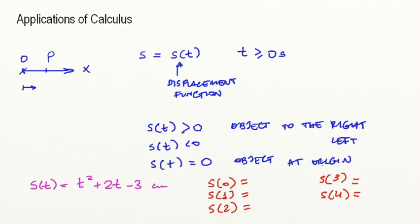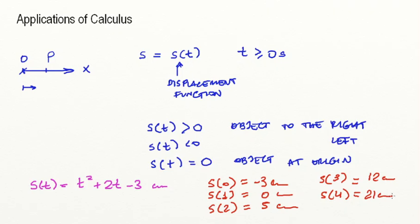So let's take a look at our displacement function again: t squared plus 2t minus 3. So if t is zero, this will be negative 3 centimeters. If time is 1, this would be 1 squared plus 2 times 1 minus 3, so that's zero. At time equals 2, s of 2 would be 2 squared plus 2 times 2 minus 3, which gives us 5 centimeters. And if you keep doing that, you would find s(3) to be 12 centimeters and s(4) to be 21 centimeters.